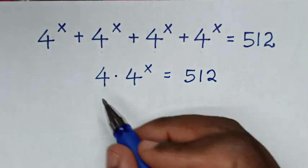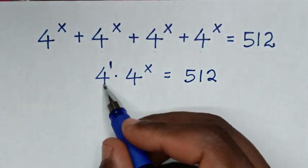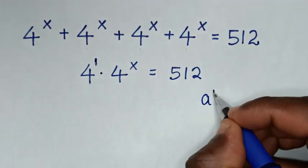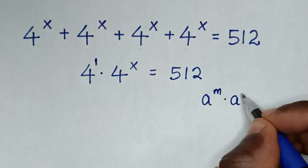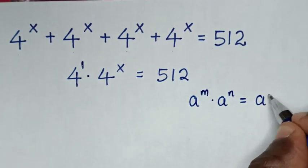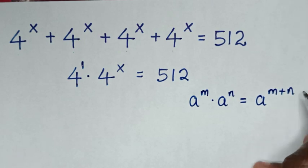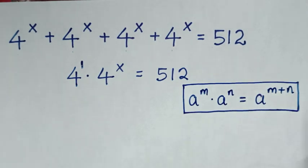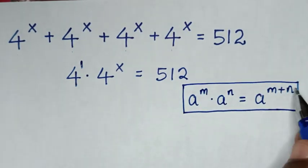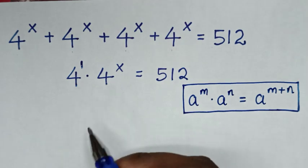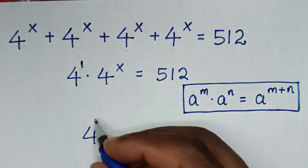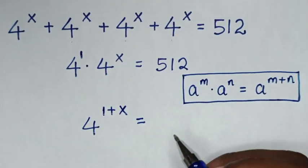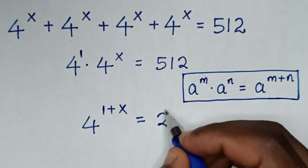Then from here, 4 is the same as 4 power of 1. Now 4 power of 1 times 4 power of x is in the form of a^m times a^n which is equal to a^(m+n). So we apply this rule, and it will be 4 power of 1 plus x is equal to 512.